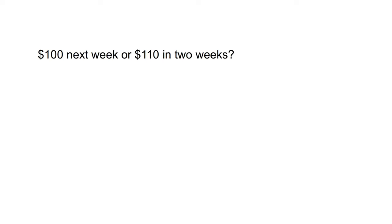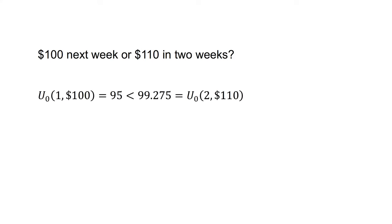For choice two, would the exponential discounter prefer $100 next week at t equals 1 or $110 in two weeks at t equals 2? The utility of $100 in one week, u(0, 1, 100), equals 95, which is less than 99.275, which we get from calculating the utility of $110 in two weeks, u(0, 2, 110). The exponential discounter will prefer to receive $110 in two weeks.